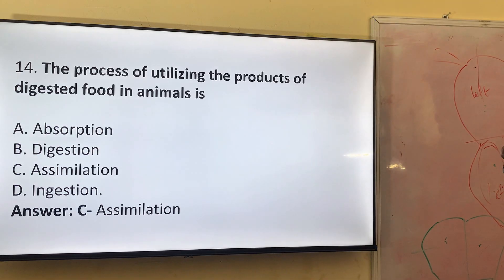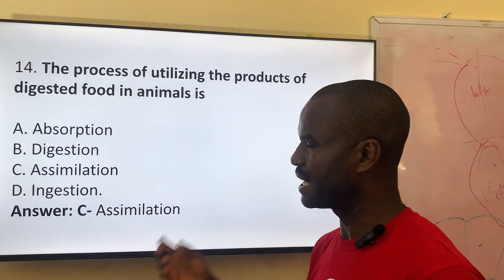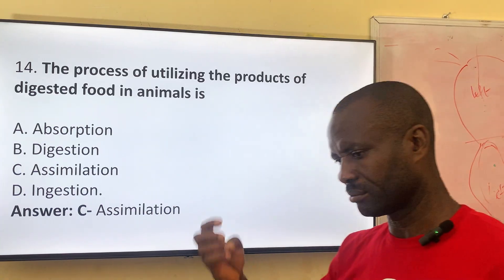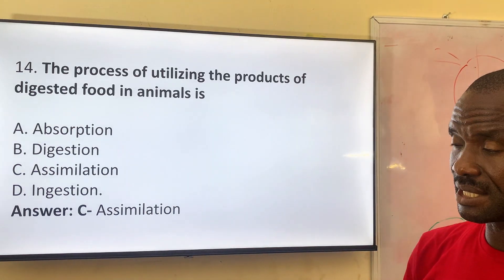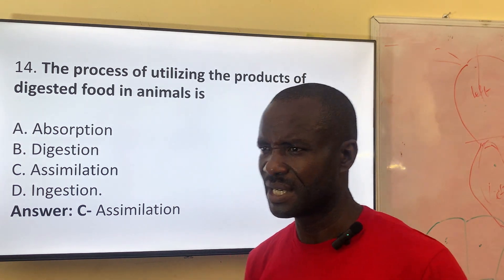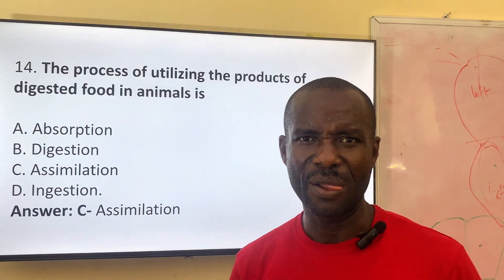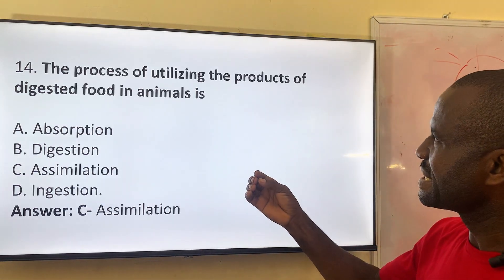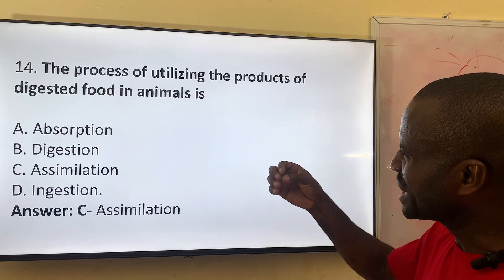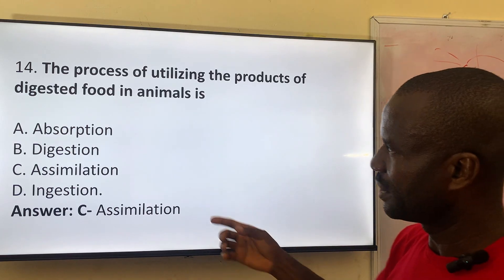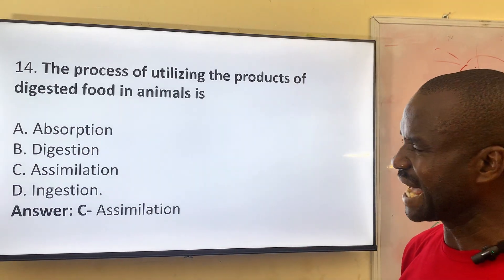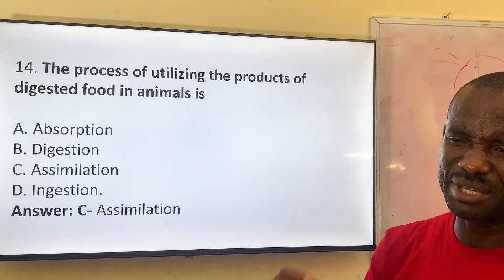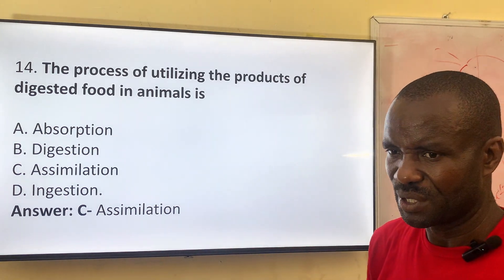Number fourteen: the process of utilizing the products of digested food in animals. During digestion, the digested food components can either be glucose if from carbohydrates, fatty acids if from fat and oil, or amino acids if from protein. What is the process of utilizing this product called? Option A: absorption. Option B: digestion. Option C: assimilation. Option D: ingestion. The answer is assimilation — the ability to take in digested food into the body cells.